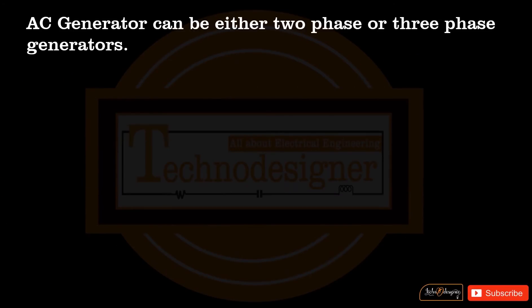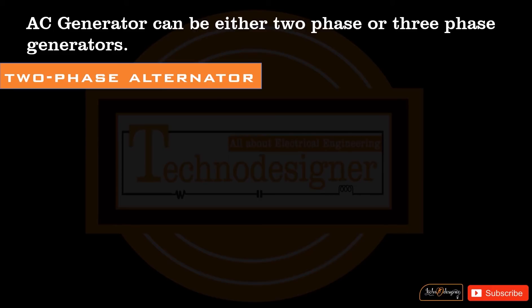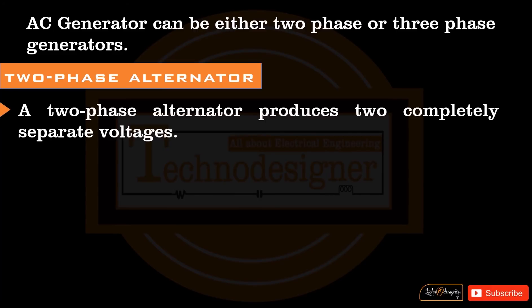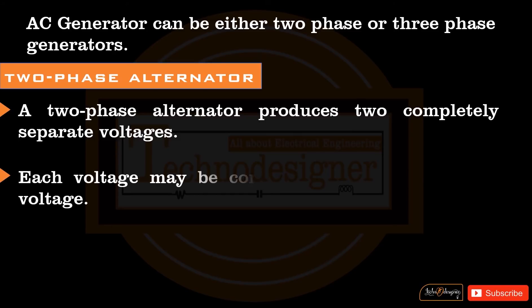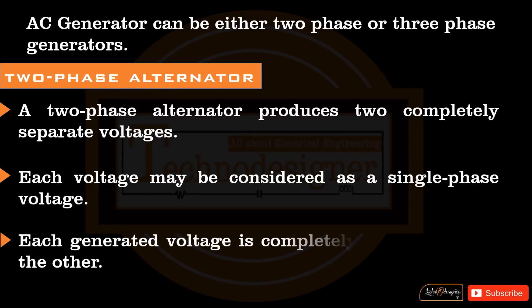AC generators can be either two-phase or three-phase generators. A two-phase alternator produces two completely separate voltages. Each voltage may be considered as a single-phase voltage, and each generated voltage is completely independent of the other.